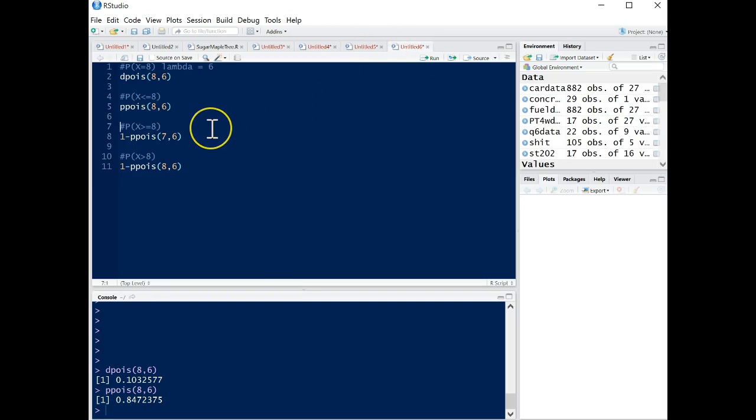If we want to know the probability that accidents will be greater than or equal to 8, so 8, 9, 10, all the way up to infinity, we can take the complement of the probability that X is less than or equal to 7. That's what this does: 1 minus ppois, 7 is the X value we're interested in, and 6 is still the lambda rate parameter. This equals 0.2560202. So there's about a 25% chance that 8 or more accidents will occur in one month.